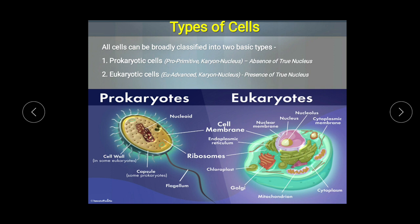Now moving to the types of cells. All cells can be broadly classified into two types: prokaryotic cells and eukaryotic cells. The term 'prokaryotic' — 'pro' means primitive and 'karyon' means nucleus — so these are cells which have a primitive type of nucleus.